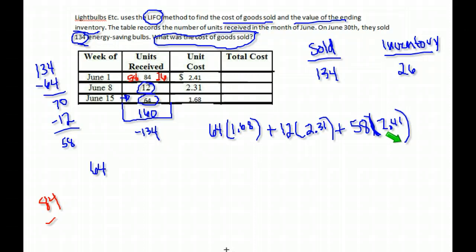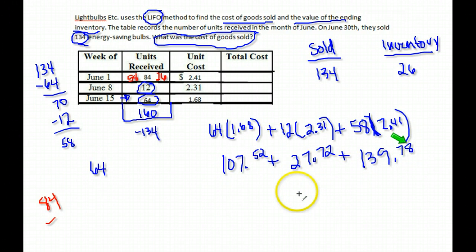So we do 64 times $1.68. We get $107.52. $12 times $2.31 gives us $27.72. And those last 58, 58 times $2.41 is $139.78. If we total those up, we'll find the total cost of goods sold. So go ahead and add those values together. And it looks like the total cost of goods sold is $275.02.